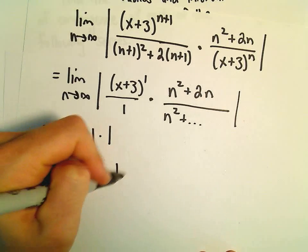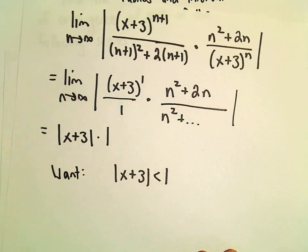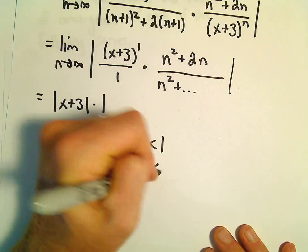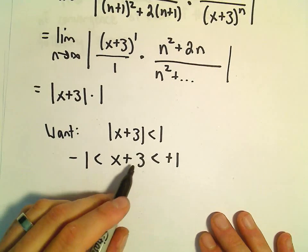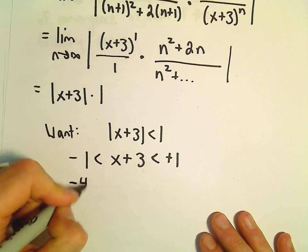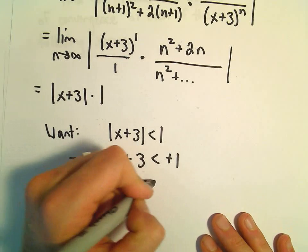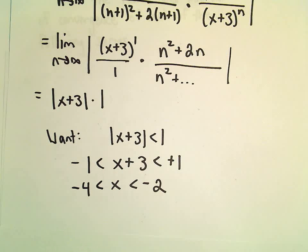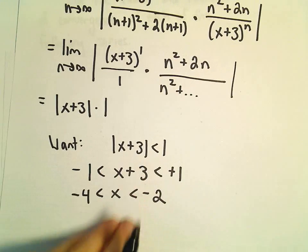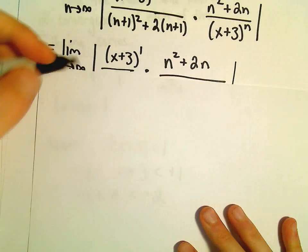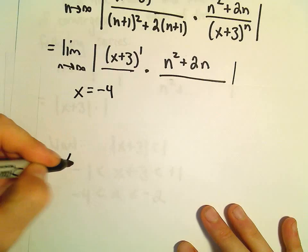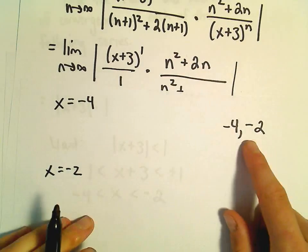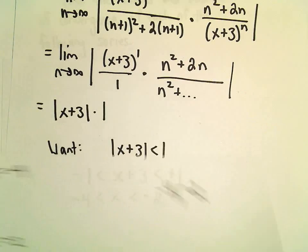So, we want this limit to be less than 1. So, again, that'll give us negative 1 less than x plus 3 less than positive 1. And now, if we subtract 3 everywhere, we'll get negative 4 less than x less than negative 2. Alright, so now we're going to have to go back and check the endpoints individually just to see what happens. So, we'll have to check x equals negative 4 and x equals negative 2. So, again, we've got negative 4 to negative 2 for our interval. I don't know if we should use parentheses or brackets just yet.